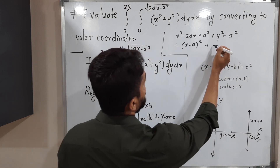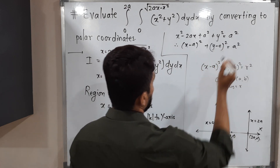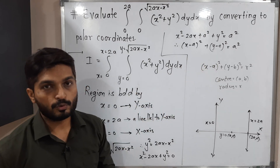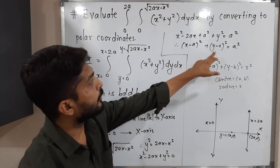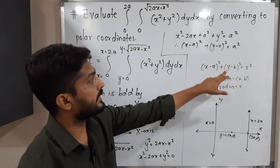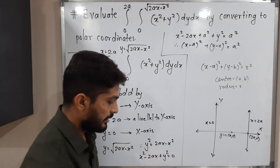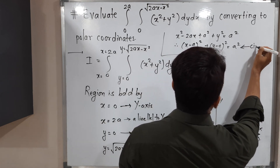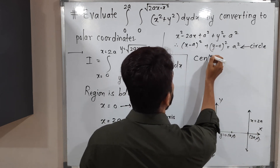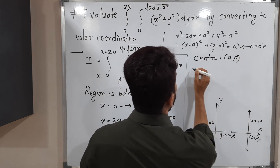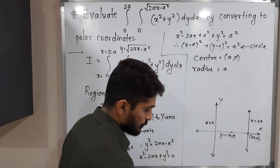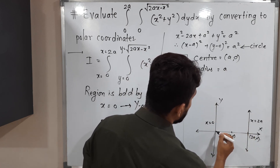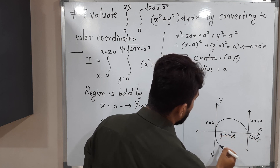We can write this as (x - a)² + (y - 0)² = a². Comparing with the standard form, the center is (a, 0) and the radius is a. So we have a circle with center (a, 0) and radius a. Let us draw this circle — the region is bounded by x = 0, x = 2a, the X-axis below, and the upper part of this circle above.